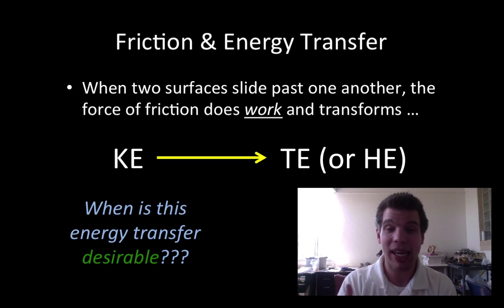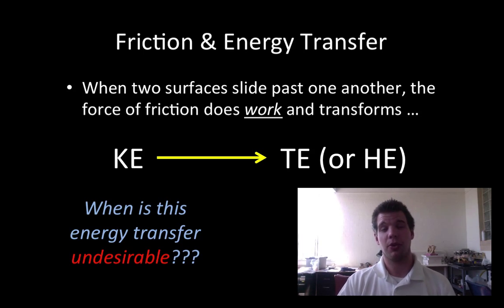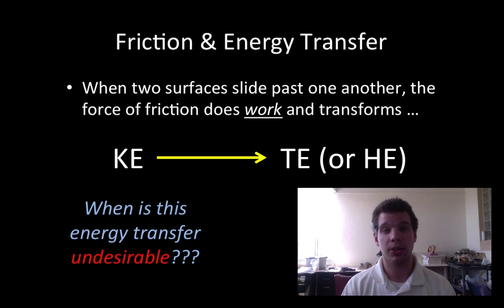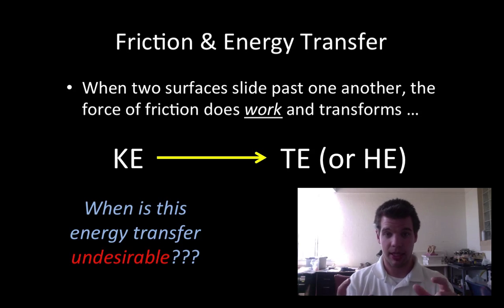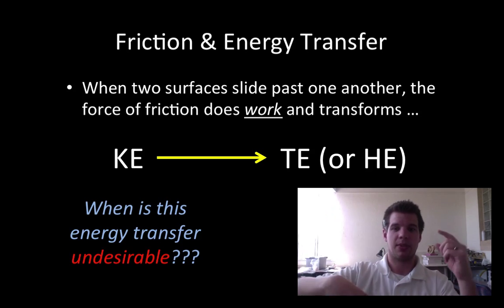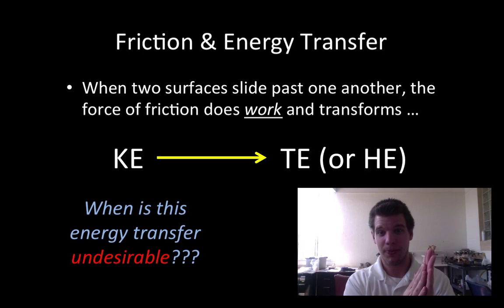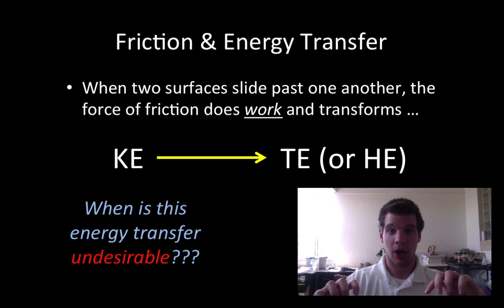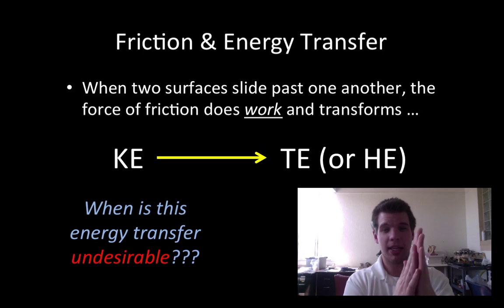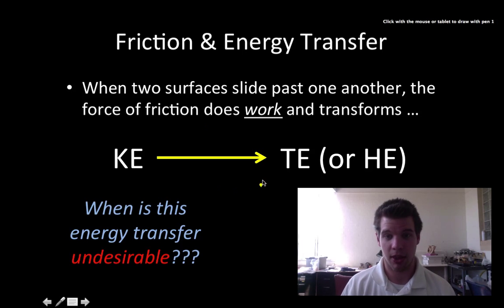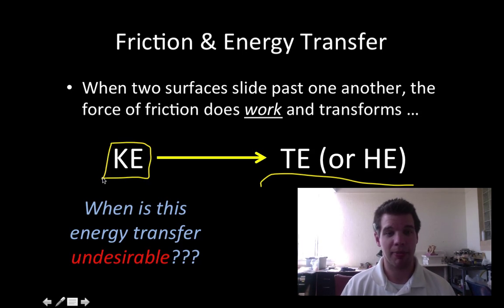Going back to the car for an example that's not desirable: think about the engine. Every so often you have to change the oil. Oil is really slippery and helps prevent friction. In your engine there's a bunch of pistons — little metal cylinders that move up and down to drive the tires. The metal pistons rub against the metal engine block, and we don't want lots of heat because we could melt the metal together. So we put oil in between the piston and the engine block to reduce that friction and the unwanted transfer into heat energy.